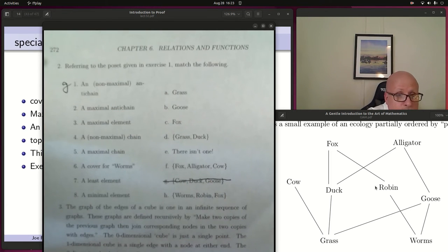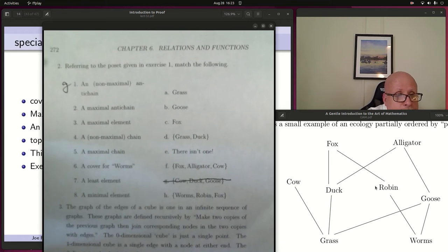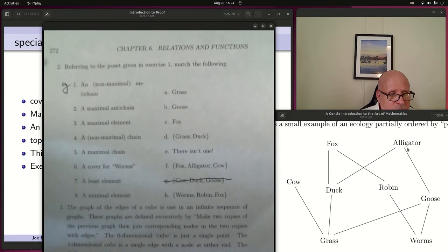A maximal anti-chain. Chains and anti-chains are sets. I think we already convinced ourselves that cow, duck, robin, goose was a maximal anti-chain, but that's not here. Is there another set that provides an anti-chain that is maximal? Fox, alligator, cow. Those things are all incomparable. Alligator and fox are certainly incomparable, but cow is also not comparable to them. So in a sense, you could think about stretching the cow thing up to this top level, and it would be more clear that it's an anti-chain. Is that really maximal? The question is, could we add anything else to it? Can we add anything else to cow, fox, alligator?